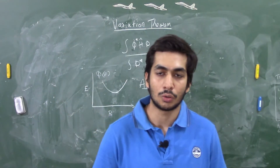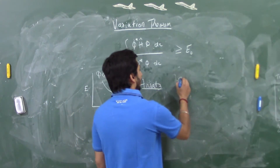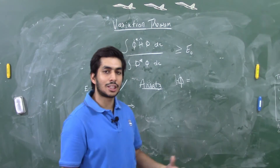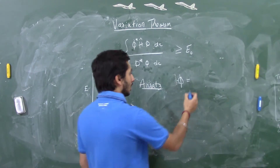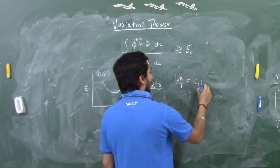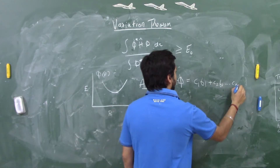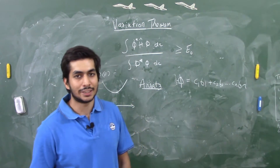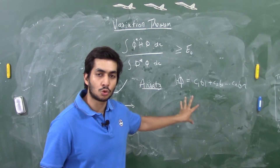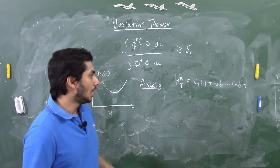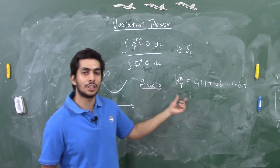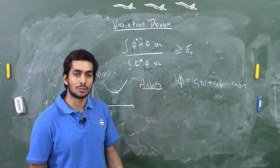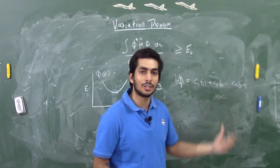Linear variation theorem states that the trial wave function can be written as a linear combination of n independent functions: φ = c₁f₁ + c₂f₂ + ... + cₙfₙ. Using linear variation theorem, we can find the energies of excited states as well, by making a secular determinant. An important point: the greater the number of linearly independent functions in the trial wave function, the better we approximate the energy — the more parameters, the closer we get to the original energy.